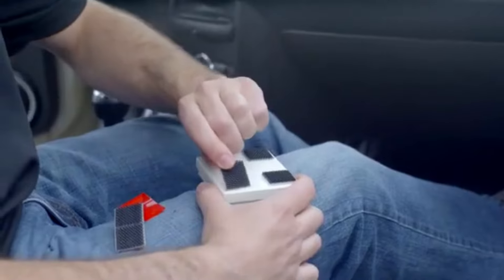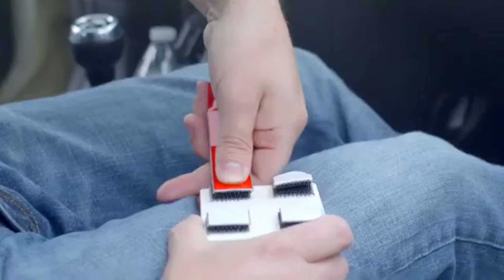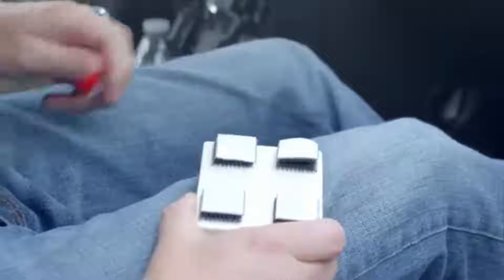Simply pull off the release liner tape, attach to your surface, remove the other side of the liner tape, and attach it to what you're mounting.